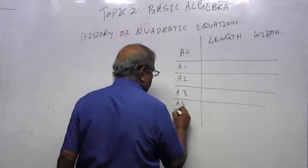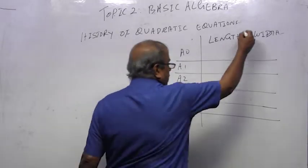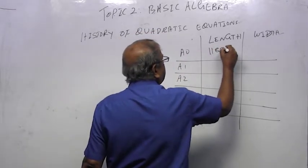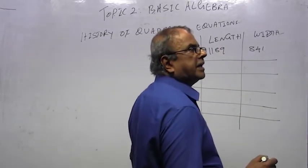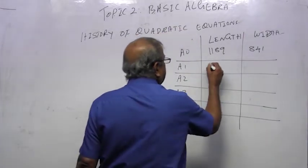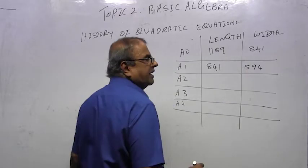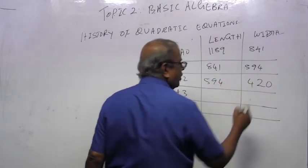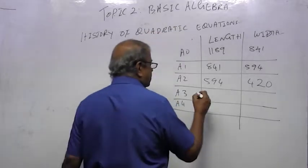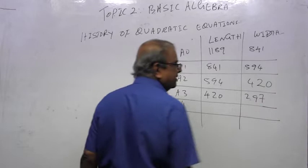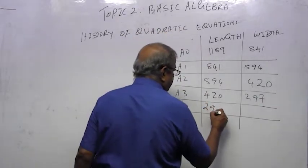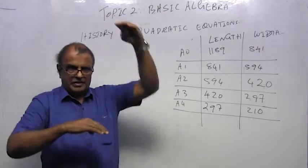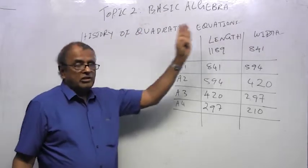A0 is 1189 by 841, then 841 by 594. Some of you will already recognize something there. 594 by 420, and then 420 by 297, and then 297 by 210.